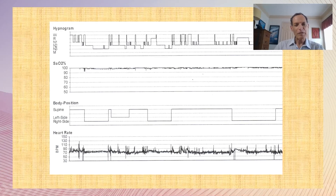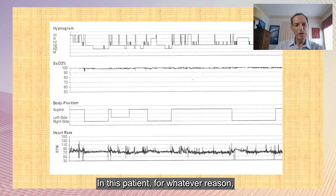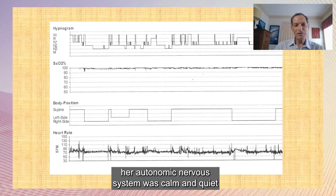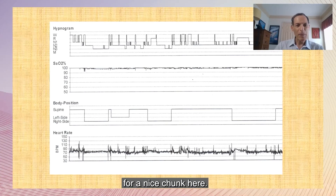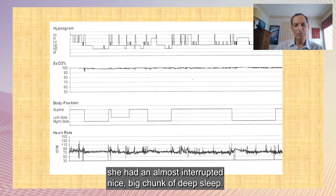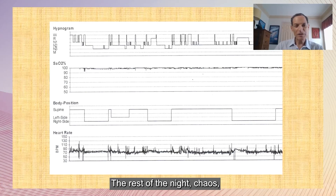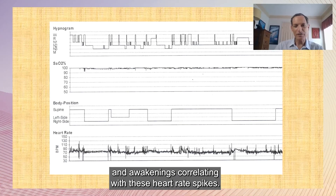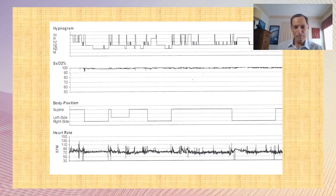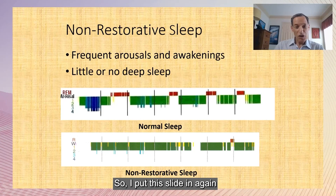In this patient, for whatever reason her autonomic nervous system was calm and quiet for a chunk of time and she had an almost uninterrupted big chunk of deep sleep. The rest of the night was chaos — heart rate up and down with awakenings correlating with heart rate spikes.